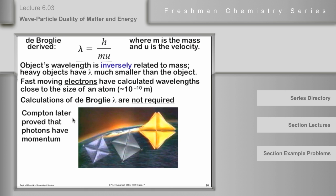Well, a while after that, a physicist by the name of Compton actually showed that de Broglie's equation does apply to photons. Now, we're talking not electrons now, but photons, and that photons have momentum.